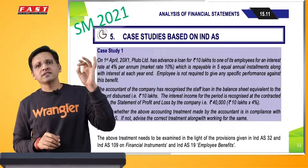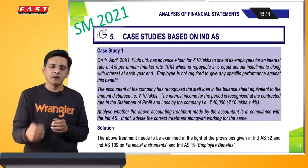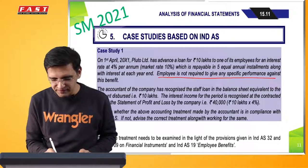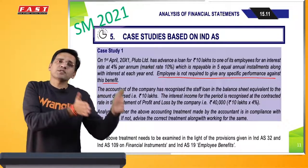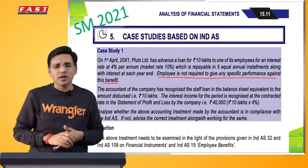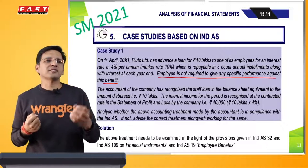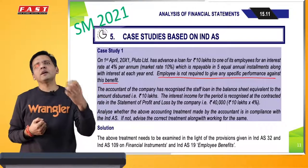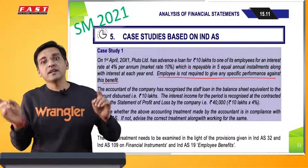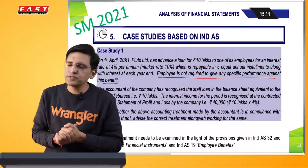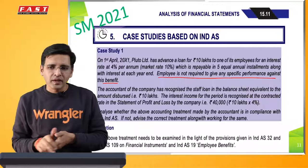Agar aap study material 2021 mein Analysis of Financial Statements ka chapter, page number 15.11 dekhenge, to usme aapko yeh question milega - Pluto Limited ke naam se - jismein employee ko concessional interest rate pe loan diya gaya, aur specifically kaha gaya ki iske liye employee ko koi specific performance dene ki zarurat nahi hai. November 2020 mein bhi yeh question aaya tha, kyunki institute ke study material mein yeh question pehle se tha. November 2020 mein to wahan pe is particular question ke answer mein unhone kaha tha: employee ko apne concessional interest rate loan diya hai, to hum fair value pe loan ko record karenge. Jitna paisa hamein zyada milna chahiye tha us loan ke badle mein - hum us difference ko employee cost manenge, aur unhone kaha tha ki isko pura one shot P&L mein daal denge, for the simple reason ki employee ko iske against koi service nahi deni hai. Yeh tha SM 2021 ka answer.